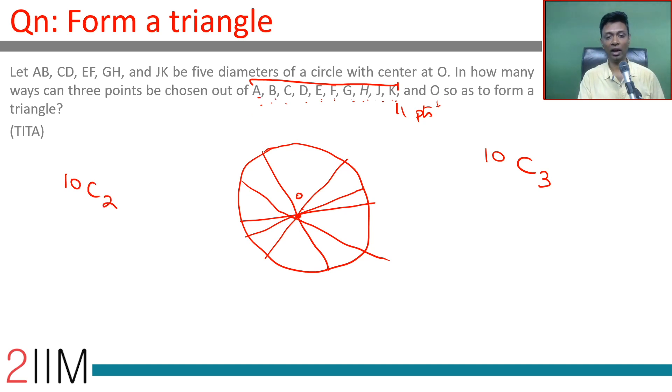However, if the 10 included AB, CD, EF, GH, or JK, then we're talking about collinear lines. This will not be a triangle. Those will have to be subtracted—we'll have to remove those.